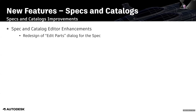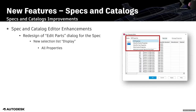There is a completely redesigned edit parts dialog. Moving over to the catalog — in the spec property editor there is a new selection list called 'display.' All properties are currently selected, so you will see everything. The first four filters are different views showing the same table but in different filter states.